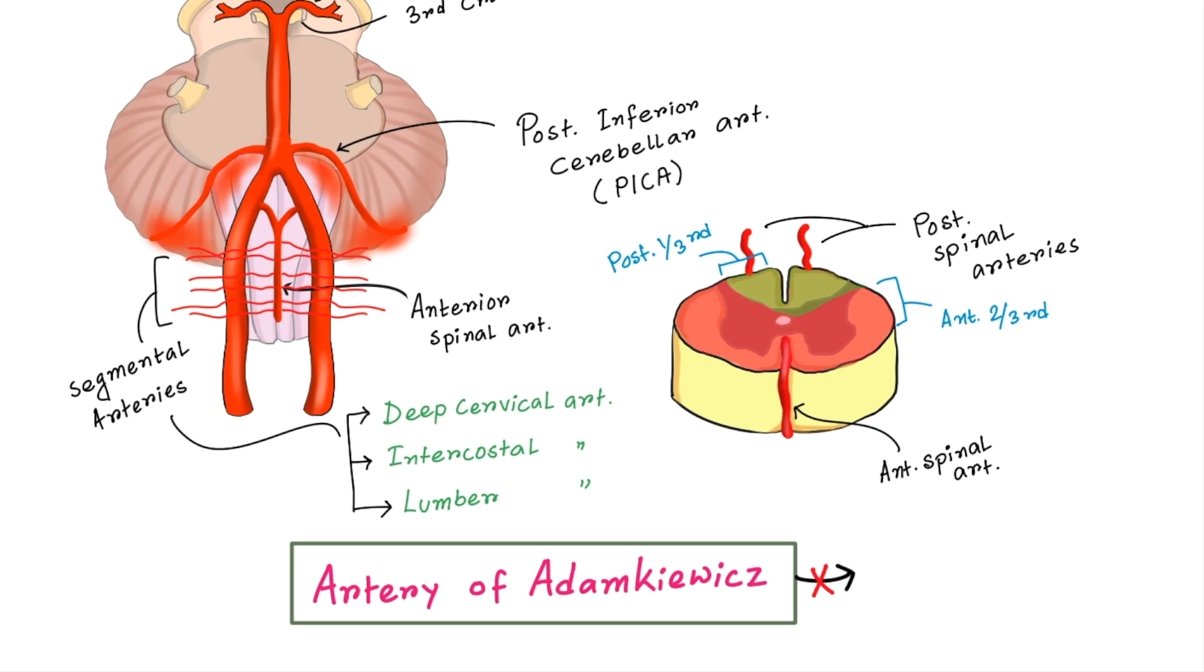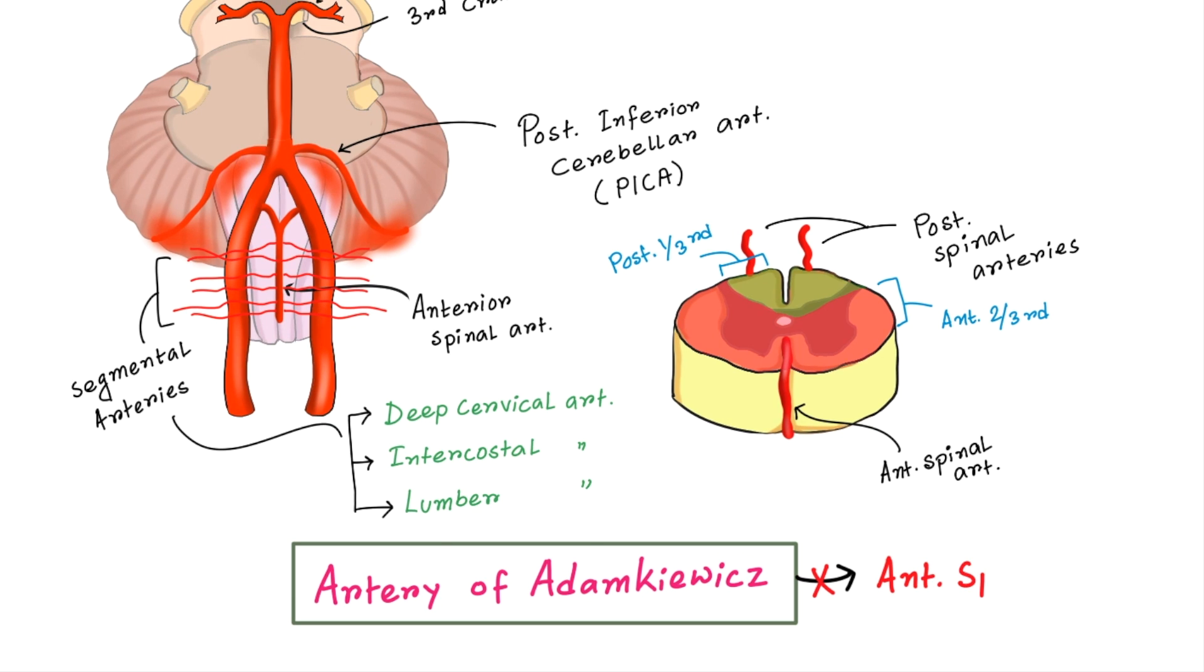When damaged or obstructed, it can result in anterior spinal artery syndrome which can cause a loss of urinary and fecal continence and impaired motor function of the legs. But sensory function is often preserved.